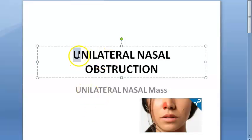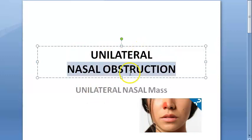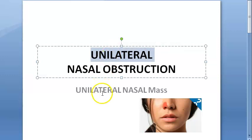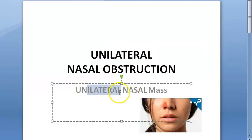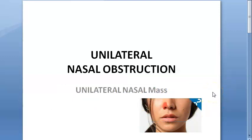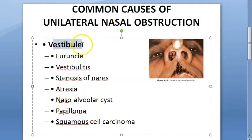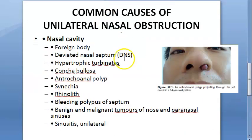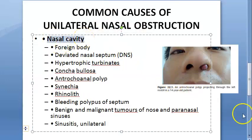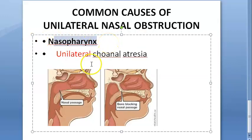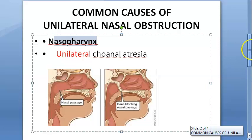In this video we want to look at the topic of unilateral nasal obstruction. If nasal obstruction is unilateral - only on one side - what could be the causes? They could also ask it as 'unilateral nasal mass, give the differential diagnosis.' So all the reasons that can cause a unilateral obstruction in the nose. There are three parts: what can be obstructing in the vestibule, in the nasal cavity, and in the nasopharynx.